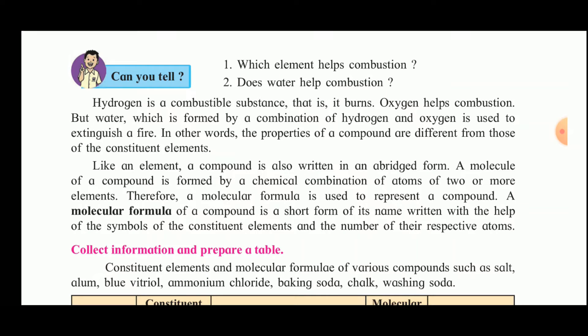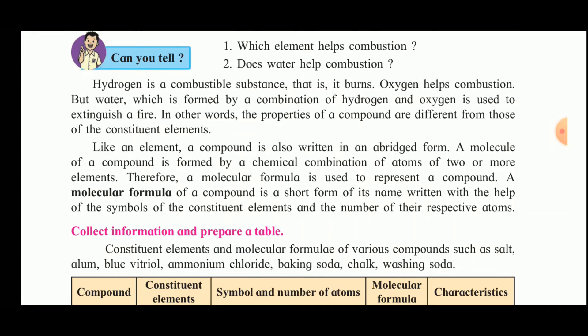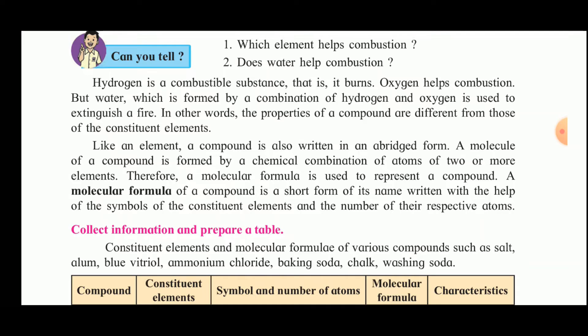Like an element, a compound is also written in an abridged form. The molecule of a compound is formed by the chemical combination of atoms of two or more elements. Therefore, the molecular formula is used to represent a compound. This is the short form of its name written with the help of symbols of the constituent elements and the number of their respective atoms.